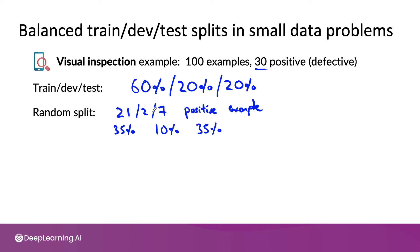But when your dataset is small, all of your 20 dev set examples means there is a higher chance of this slightly less representative split.